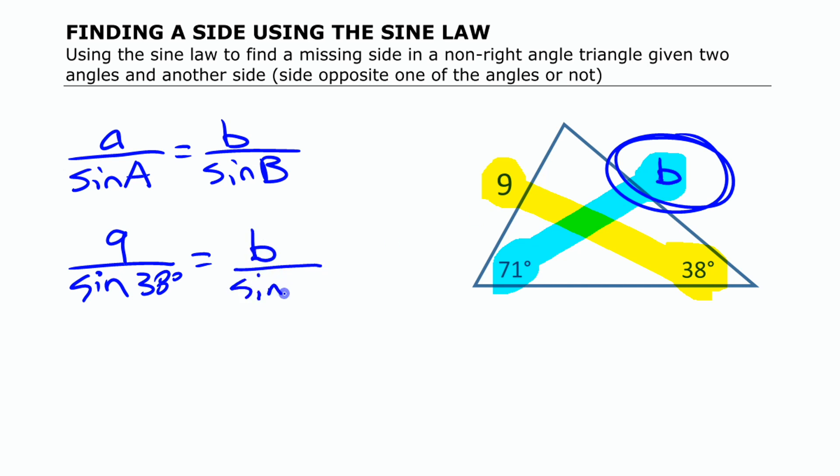If I want to isolate this now, if I want to find this, I want to isolate that. If I multiply both sides by sine 71, I'll find what it is. If I want, I can even write it here like this and say sine 71, sine 71 on both sides, and this will cancel each other out.